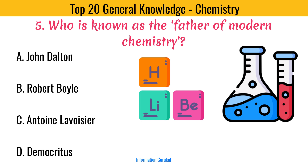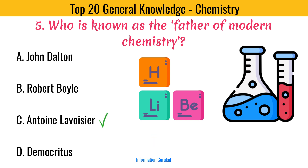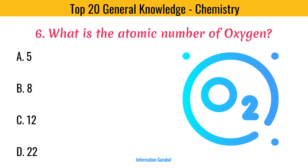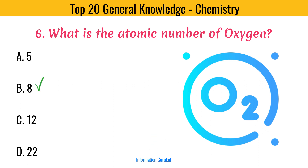Who is known as the father of modern chemistry? Antoine Lavoisier. What is the atomic number of oxygen? Eight.